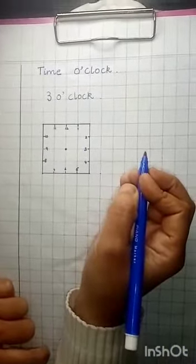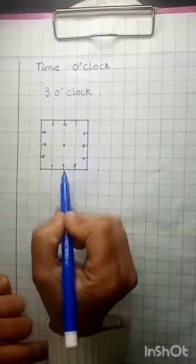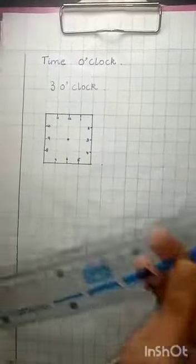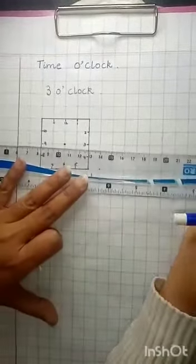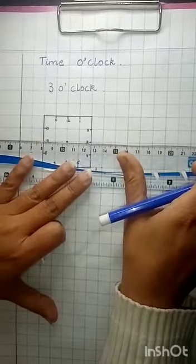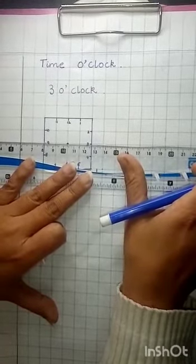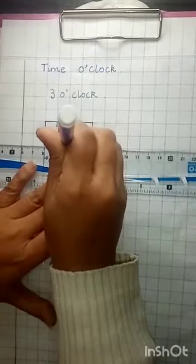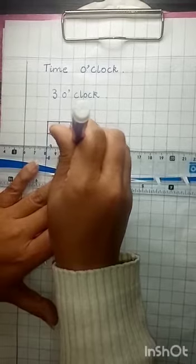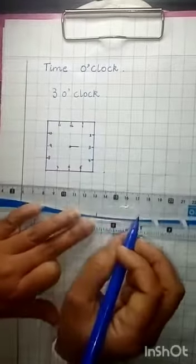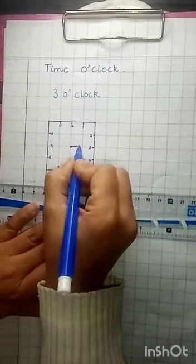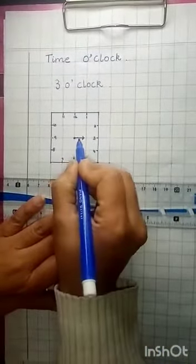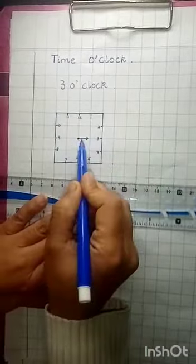Now we have to show 3 o'clock on this clock. So with the help of this ruler we will point the small hand towards the 3. This small hand. And make an arrow over here. So this small hand stays inside this block.